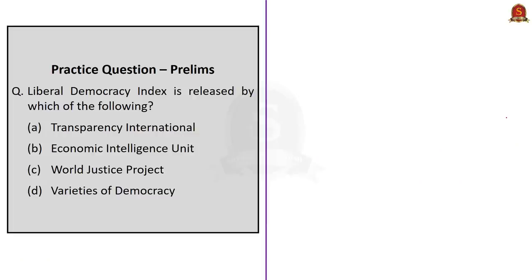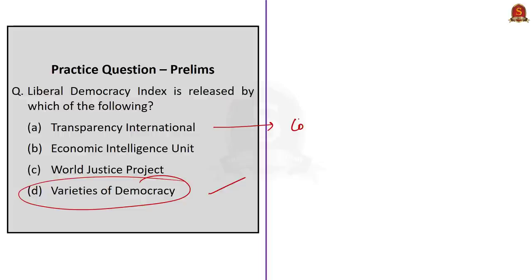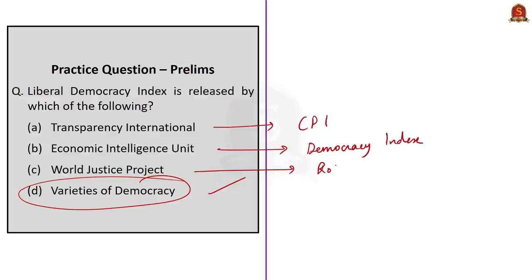The next question: Liberal Democracy Index is released by which of the following — (A) Transparency International, (B) Economic Intelligence Unit, (C) World Justice Project, or (D) Varieties of Democracy? The correct answer is option D, Varieties of Democracy, in short VDEM. Transparency International releases the Corruption Perception Index, the EIU releases the Democracy Index, and the World Justice Project releases the Rule of Law Index.